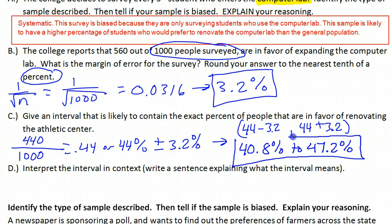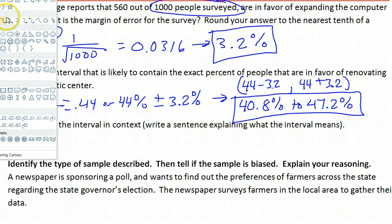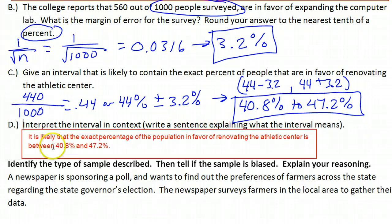This is the interval that is likely to contain the exact percentage of students who prefer renovating the athletic center. Just putting that into a sentence, that's what it means when we say interpret the interval in context. Write a sentence. It is likely that the exact percentage of the population in favor of renovating the athletic center is between 40.8% and 47.2%.